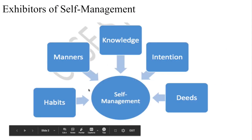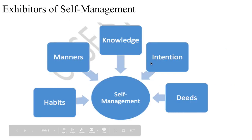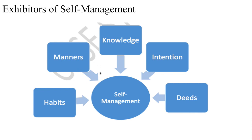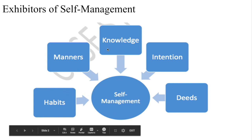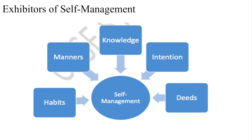Next are the exhibitors of self-management. You can see here: habits, manners, knowledge, intentions, and deeds. These are basically the exhibitors of self-management. Exhibitors means the factors by which self-management is exhibited — how we can implement it. First is habits: good habits like brushing teeth, taking a bath, eating a balanced diet, and sleeping and getting up at the right time every day.